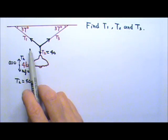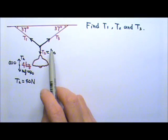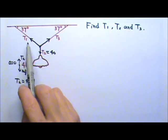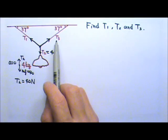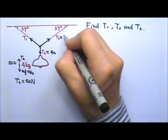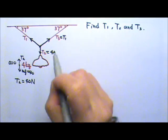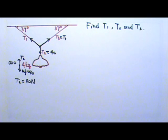Because this scenario happens to be symmetric left and right, that means T1 and T3 must be equal. So I'm just going to say this is T1. That way I have fewer unknowns involved, and we just have one unknown T1 to find.